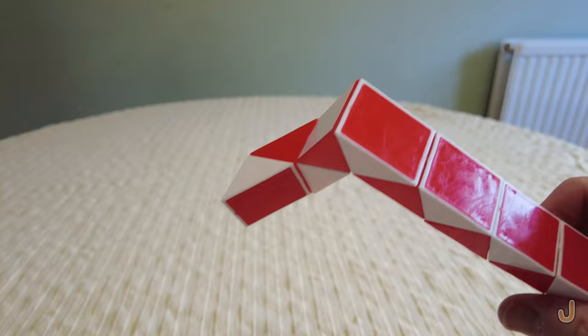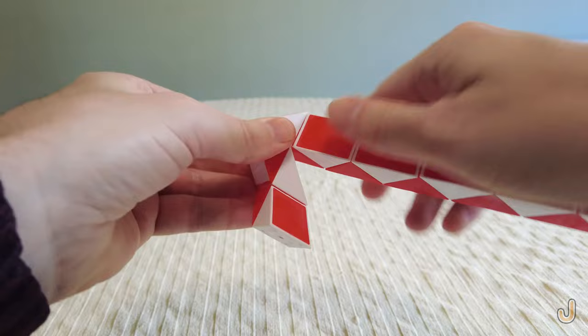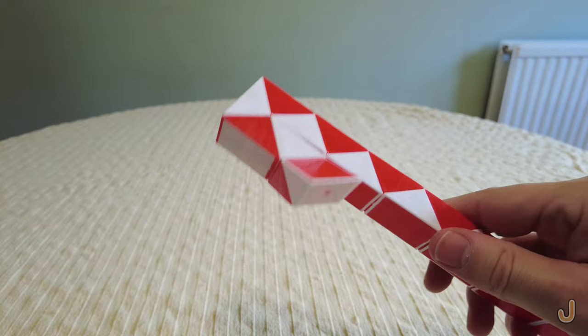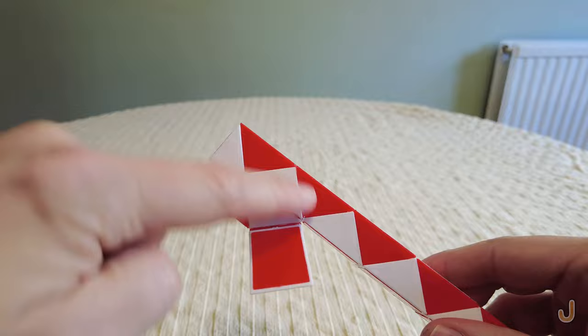Now bend at this joint twice downwards, one, two, to make this rectangular shape, and then at this joint two turns away from you, one, two.